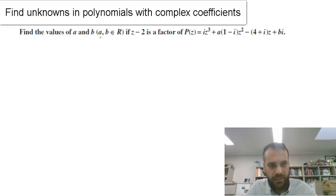Find the values of a and b. Remember that a and b are real numbers. If z minus 2 is a factor, now remember if z minus 2 is a factor, that means that 2 is going to be a zero, where P(z) equals iz³ plus a(1-i)z² minus (b+1)z plus bi. Let's see how to go here.